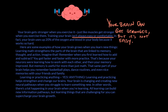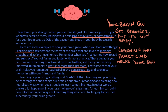Here are some examples of how your brain grows when you learn new things. Learning math strengthens the parts of the brain that are linked to memory, thought, and action. Remember when you first learned how to add and subtract? You got faster and faster with more practice. That's because your neurons — those are brain cells — your neurons were learning how to work with each other, and then your memory improved. But memory is useful for more than just math. That same part of your brain helps you remember basketball plays, dance routines, and even nice memories with your friends and family. So it's not just about math — learning and practicing things helps your brain work faster.